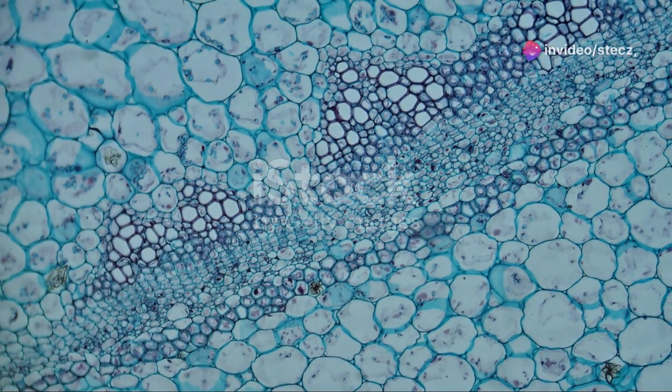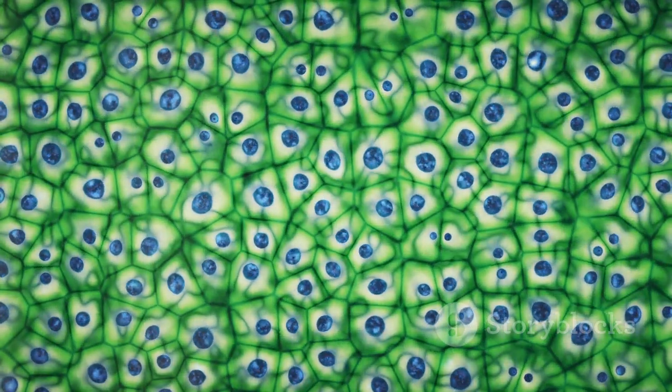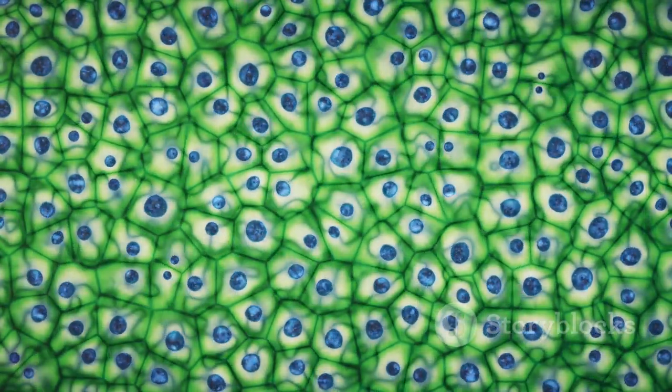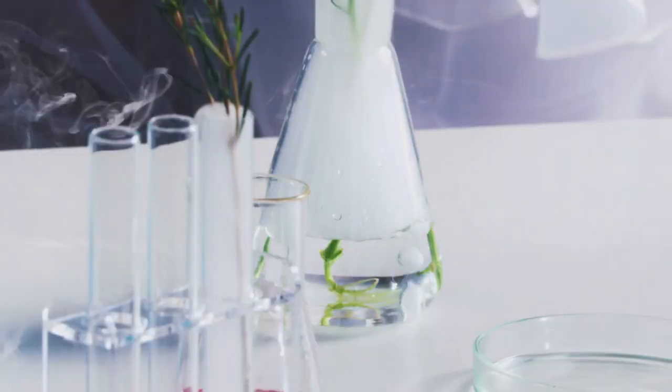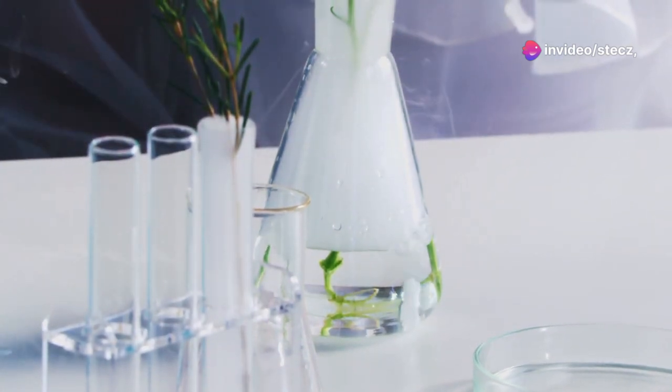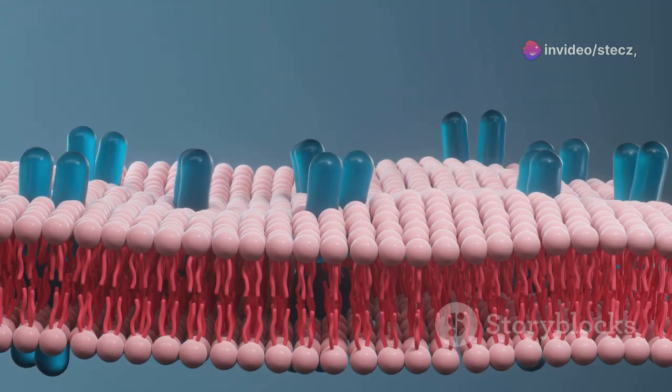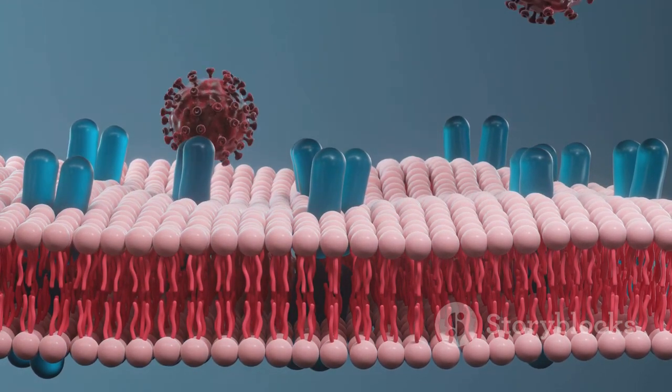Having navigated the plant's vascular system, nitrogen now finds itself at the doorstep of a new frontier, the plant cell. Enclosed within each cell, a microscopic universe of organelles hums with activity. It's within these cellular factories that nitrogen will undergo further transformations. Imagine the cell membrane as a gatekeeper, regulating the flow of molecules in and out of this microscopic city.